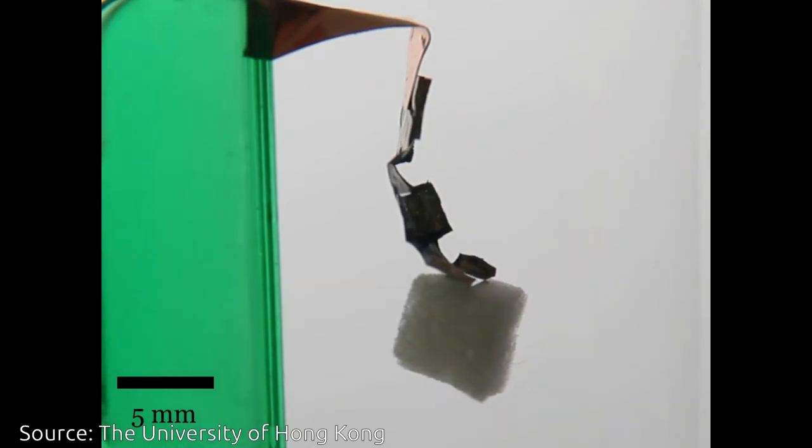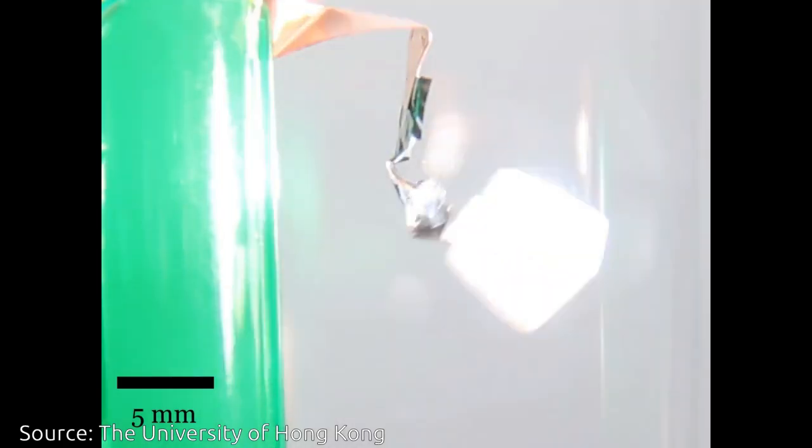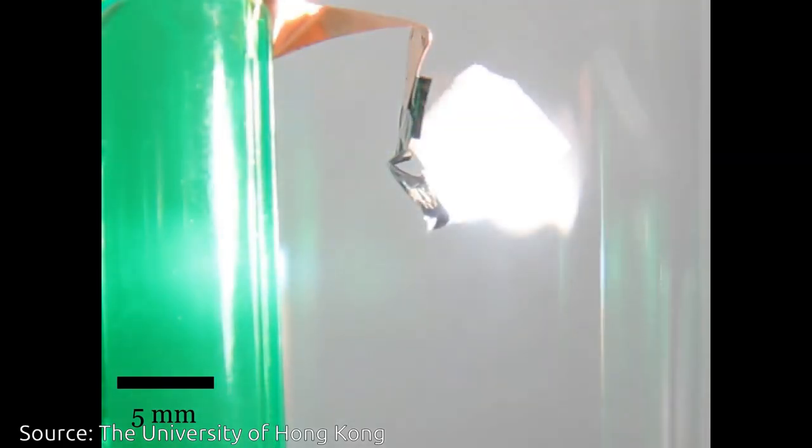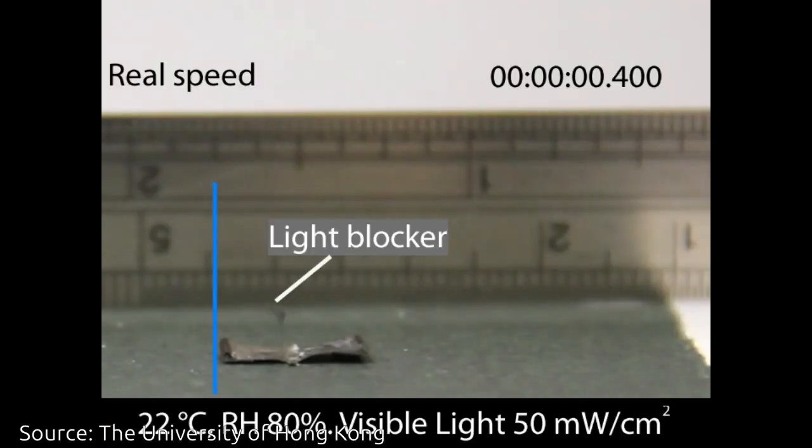Developing actuating materials was identified as the top of the ten challenges in the Grand Challenges of Science Robotics. Research in actuating materials can radically change the concept of robots, which are now mainly motor-driven.